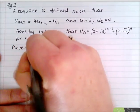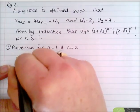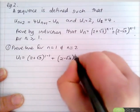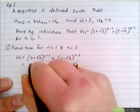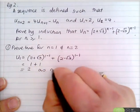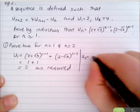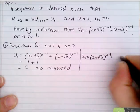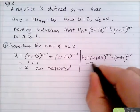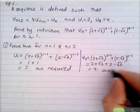Step 1: prove true for n = 1 and n = 2. u₁ = (2+√3)^0 + (2−√3)^0 = 1 + 1 = 2, as required. u₂ = (2+√3)^1 + (2−√3)^1 = 2+√3 + 2−√3 = 4, which equals u₂, as required.